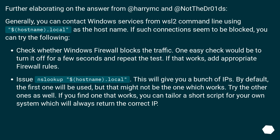Further elaborating: generally, you can contact Windows services from the WSL2 command line using $hostname.local as the hostname. If such connections seem to be blocked, check whether the Windows firewall is blocking the traffic. One easy check is to turn it off for a few seconds and repeat the test. If that works, add the appropriate firewall rules.